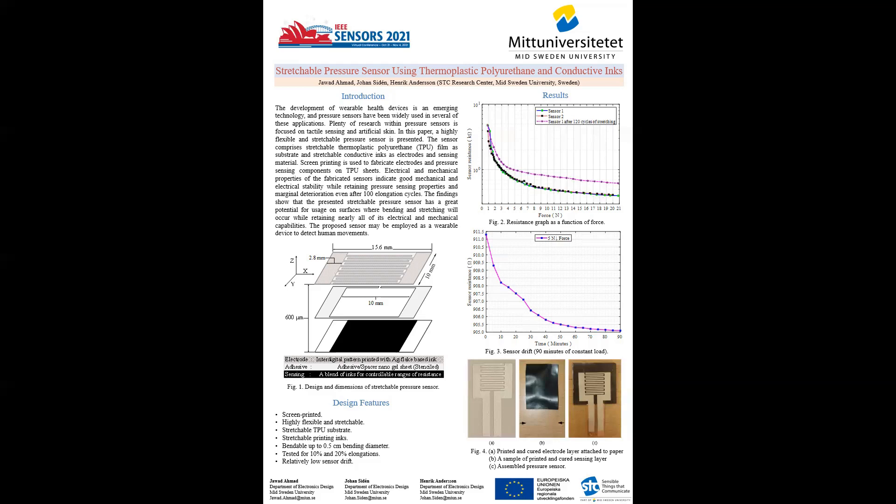The characterization is carried out to investigate the behavior of the pressure sensor under the application of force. The resistance with respect to application of force is shown in figure 2 and it is realized by using a commercial dynamometer. The resistance is logged using a multimeter. One set of readings is taken before the elongation cycles and the other just after the elongation cycles.